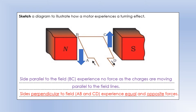For side AB, the conventional current goes from A to D, so positive charges move from A to B. Pointing the middle finger along A to B with the field going north to south, the thumb points downwards — so side AB experiences a downward force. For side CD, positive charges go from C to D, coming out of the page. With the field still going left to right, the thumb points upwards, so side CD experiences an upward force.